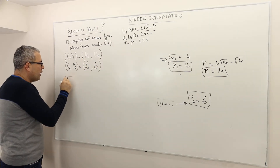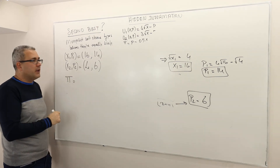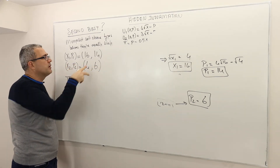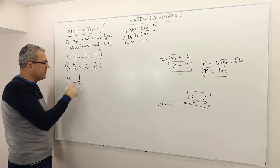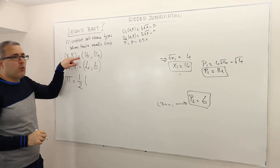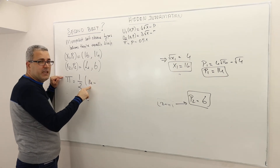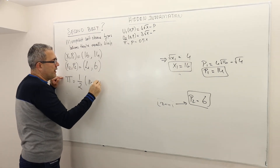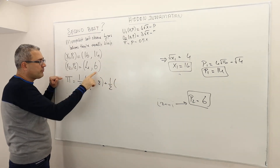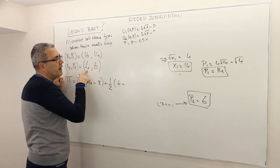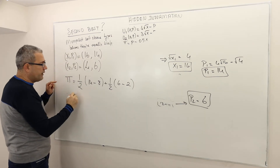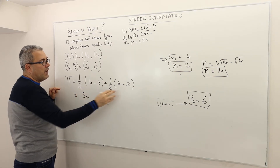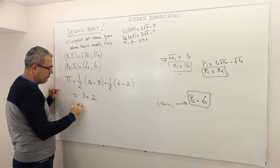The expected profit of the monopolist is: one-half times (14 minus 0.5 times 16) plus one-half times (6 minus 0.5 times 4) equals one-half times (14 minus 8) plus one-half times (6 minus 2) equals 3 plus 2 equals 5.